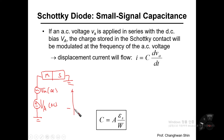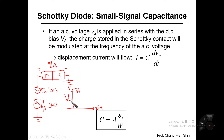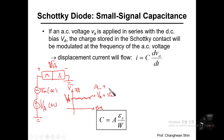If I draw time versus voltage across the MS diode: for a given DC bias V_A, a very small AC component, small v_a, is added on top. So the total signal value is V_A plus v_a — DC plus AC. This is the real voltage value across the MS diode.